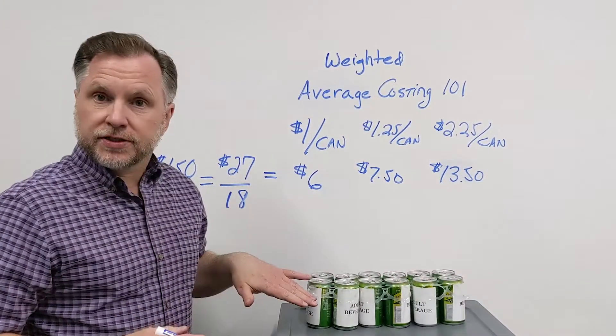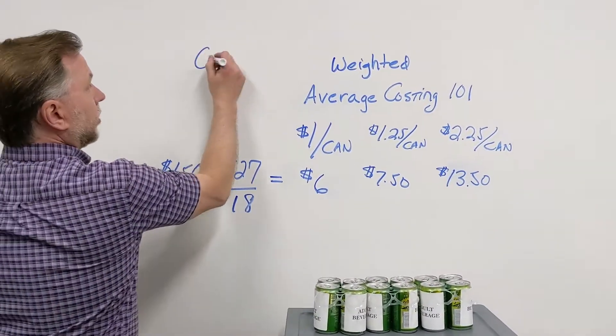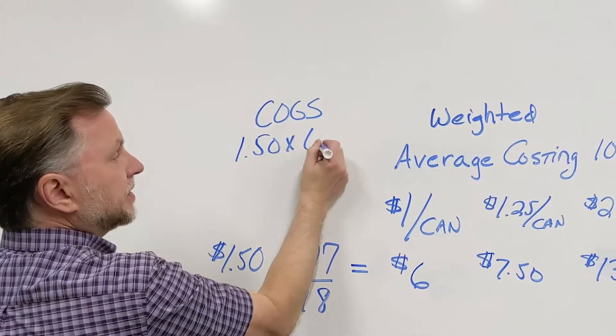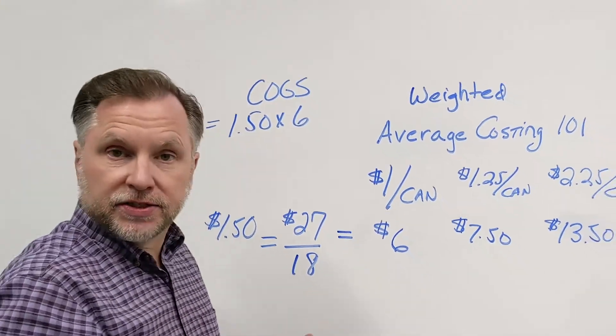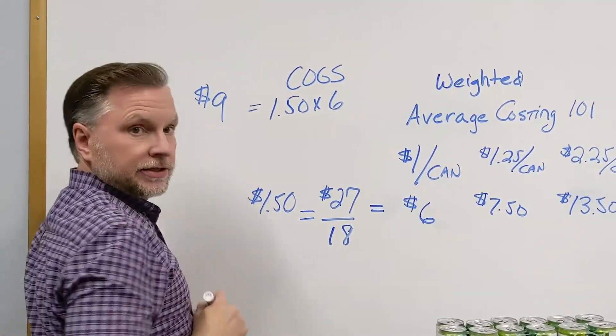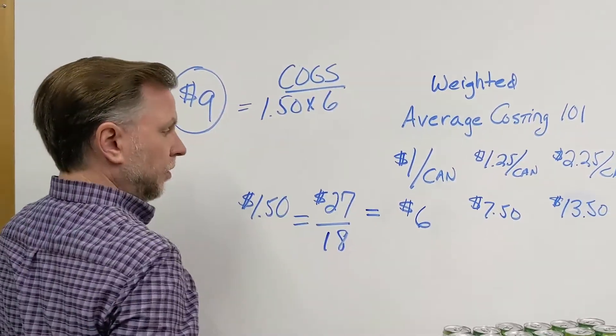Our cost of goods sold will be $1.50 times the six cans that we sold. And that winds up being $9. So we have $9 in cost of goods sold.